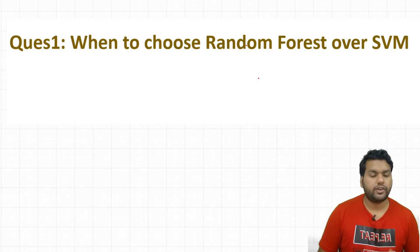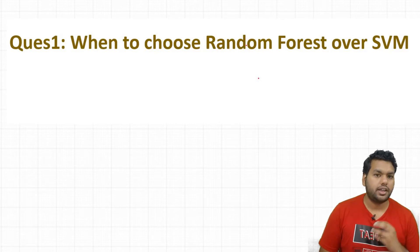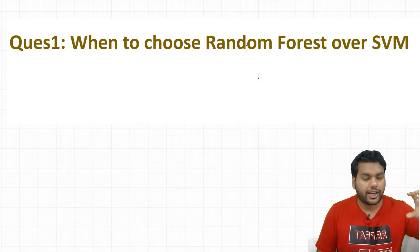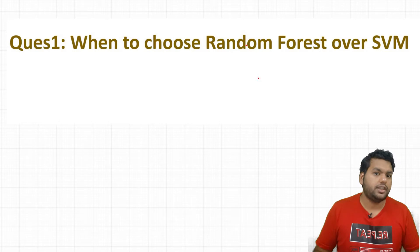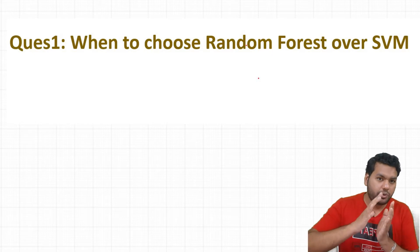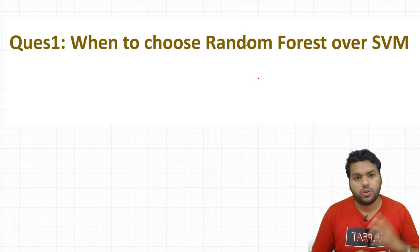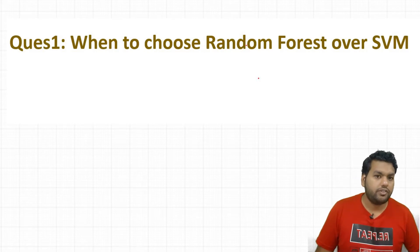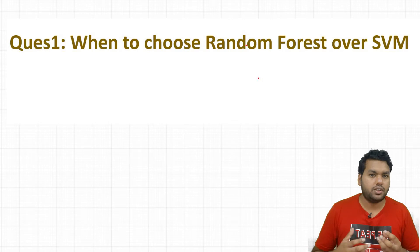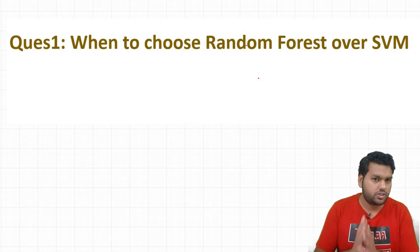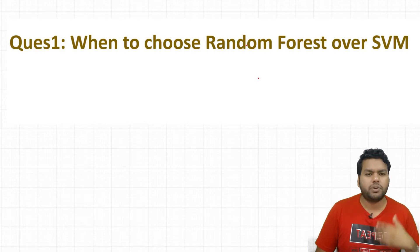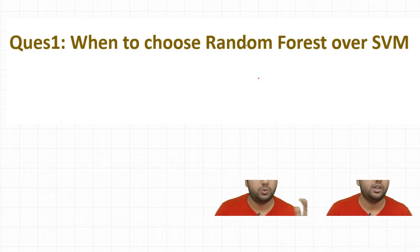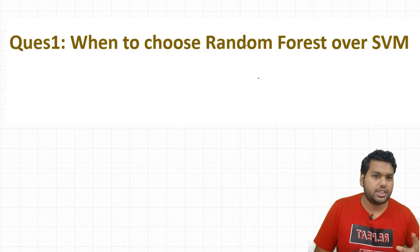The first question is when to choose a random forest over SVM. Random forest uses decision trees as base learners — it is actually a bunch of decision trees. The beauty of a decision tree is that it works like an if-else condition, meaning it does not depend on distance. The support vector machine, on the other hand, tries to maximize the distance between the hyperplane. Because random forest is not distance-based, when we have features whose scales are not the same, we do not need to perform normalization or min-max scaling.